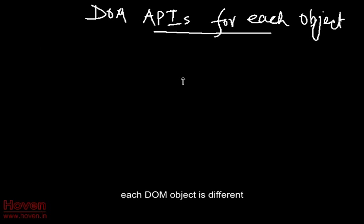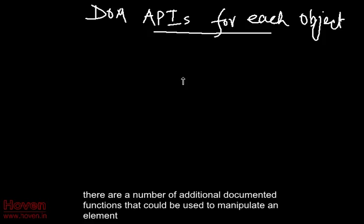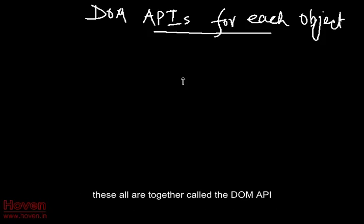Each DOM object is different. It has its own list of properties, events and functionality. Each object has its own documentation, clearly laid down in the DOM standard. There are a number of additional documented functions that could be used to manipulate an element. These all are together called the DOM API.